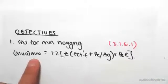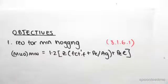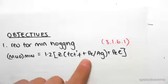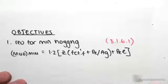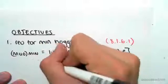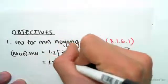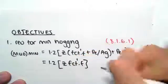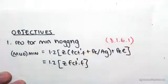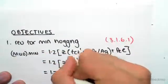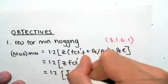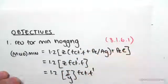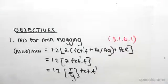This is the formula for minimum hogging and sagging. The term P subscript e is pre-stress — we don't have any pre-stress so that goes to zero. We're left with z times fct.f', where z is the section modulus, which is I on y, times fct.f'.